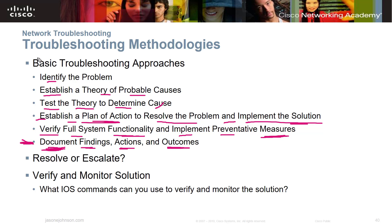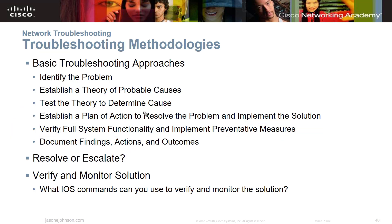If you've taken the IT Essentials course — I highly recommend it — this troubleshooting approach is covered very extensively there, and it applies across all of IT. The six steps are: identify the problem, establish a theory of probable cause, test the theory, establish a plan of action, verify functionality, and document your findings. Make sure you fully understand this basic troubleshooting approach.